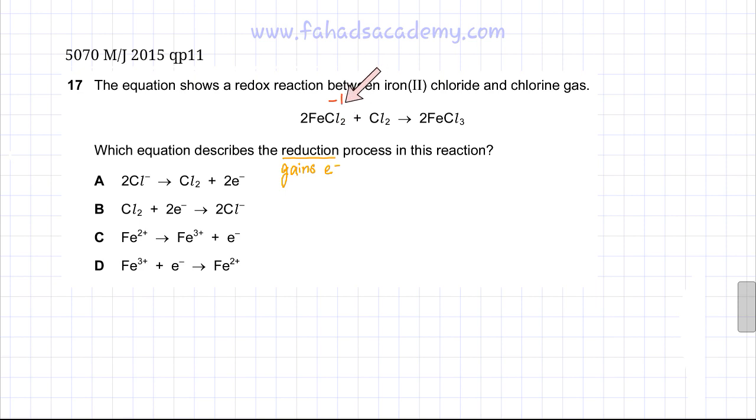So Fe would be 2 plus or plus 2. The reason Fe would be plus 2 is to balance out the charges because you have 2 Cls with a charge of minus 1. There is only one Fe, so that would have a charge of plus 2.